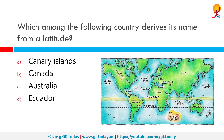Which among the following countries derives its name from a latitude? The correct answer is Ecuador. Ecuador is Spanish for equator, the equator being the latitude that divides the earth into two halves.